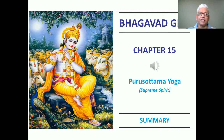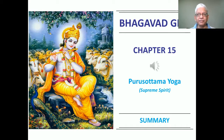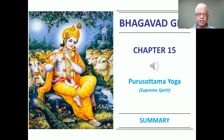The first six chapters are called the first shatka, basically describing the Jiva — who am I. That aspect is discussed in the first six chapters. The next section is called the Ishwara section, or Tathpada. From chapter 7 to chapter 12, we learn about God — the nature of God.